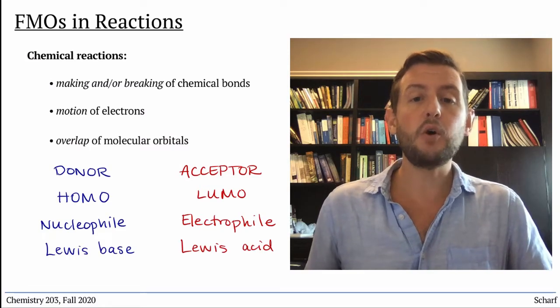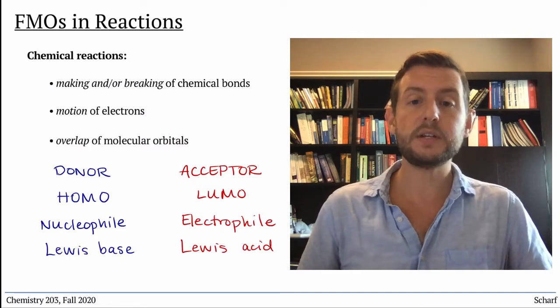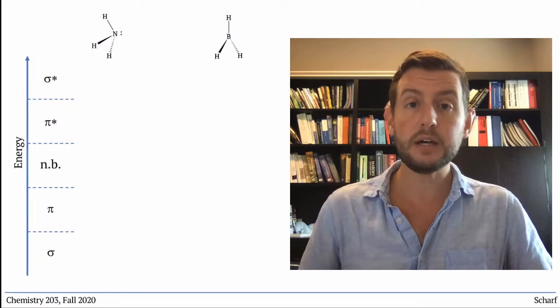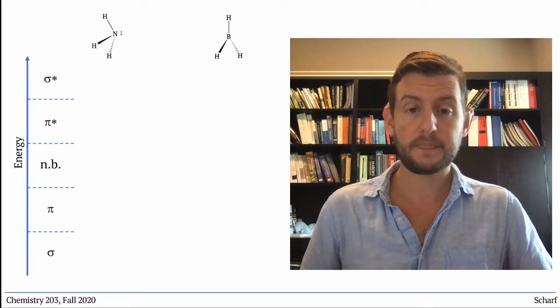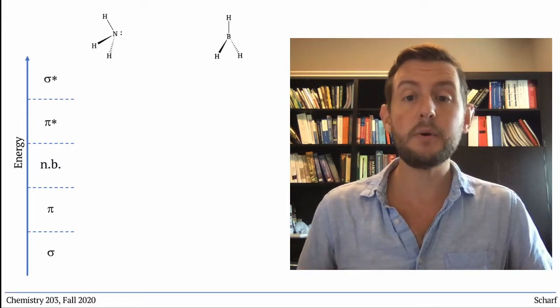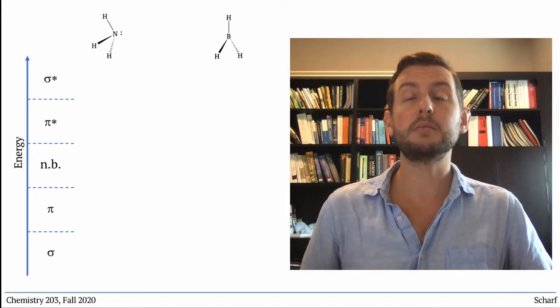Let's take this principle of HOMO-LUMO interaction, and use it to understand the reaction between ammonia, NH3, and borane, BH3. First, let's construct their MO diagrams and identify their frontier molecular orbitals.